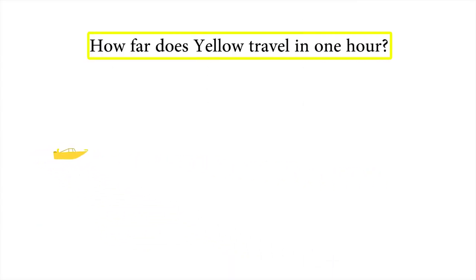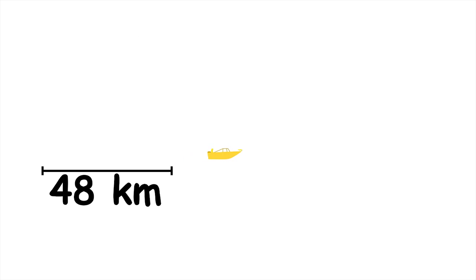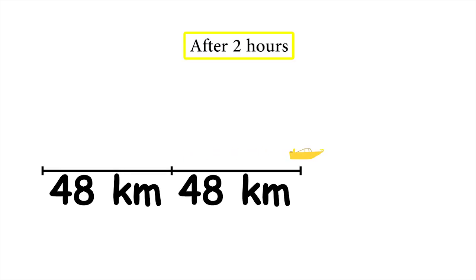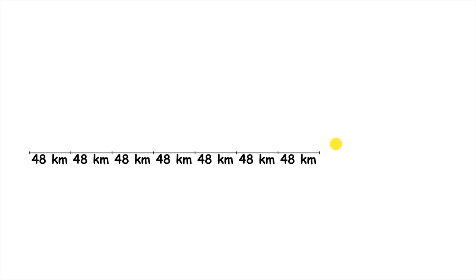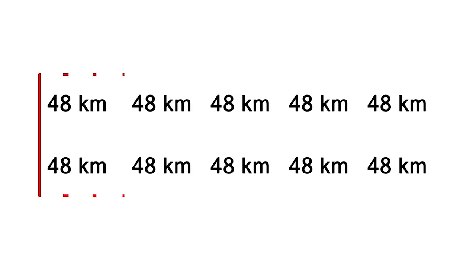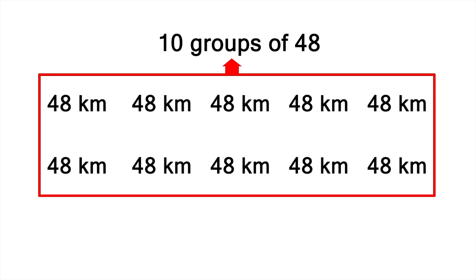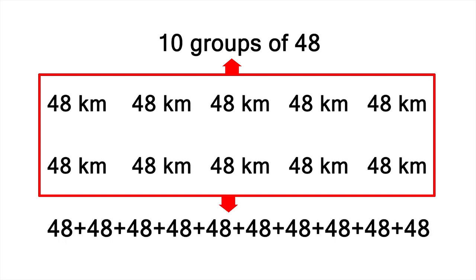If yellow travels at 48 kilometres per hour, in one hour he covers a distance of 48 kilometres. But then he travels another hour, so we have to add another 48 kilometres. Then another hour, and another 48 kilometres. We have to repeat this process 10 times, because that's the number of hours he spends travelling. We end up with 10 groups of 48. We could use repeated addition to add them up, but a quicker way is to solve the equivalent multiplication problem: 10 times 48.